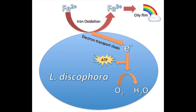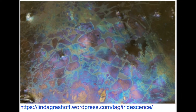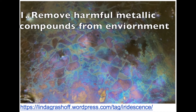In this manner, we would define L. dyscophora as a chemolithotroph. This oxidizing ability makes L. dyscophora unique and crucial to many environments. For one, it can remove harmful metallic compounds from the environment.